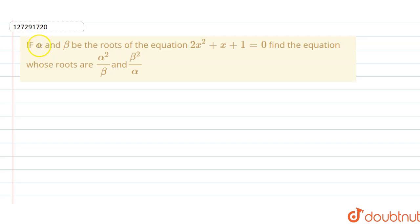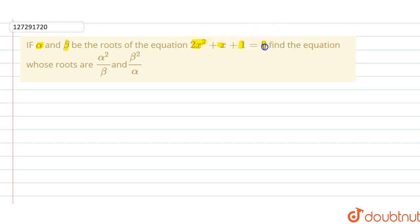Welcome guys. If alpha and beta be the roots of the equation 2x squared plus x plus 1 equals to 0, find the equation whose roots are alpha squared divided by beta and beta squared divided by alpha.